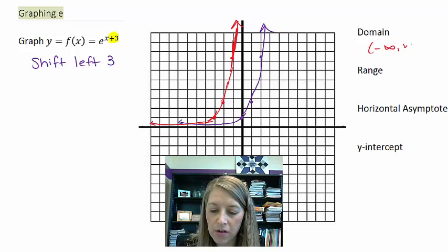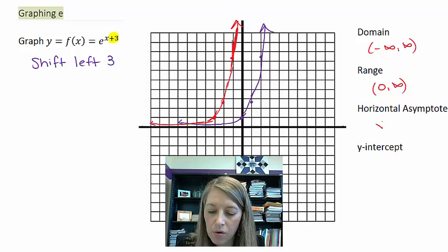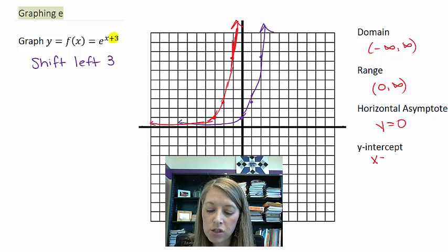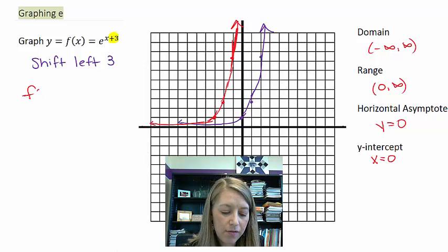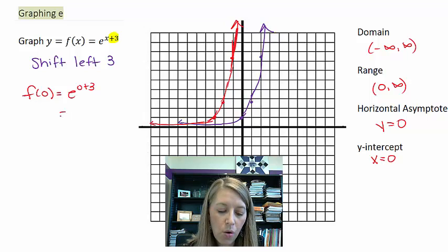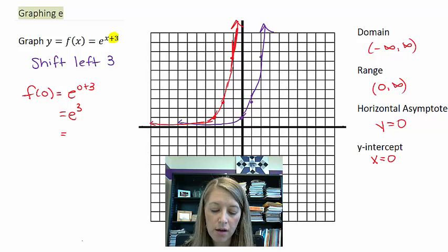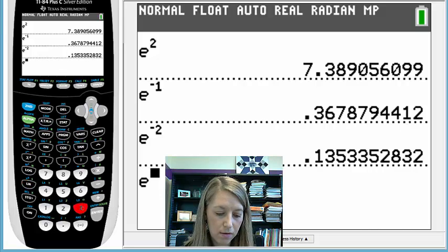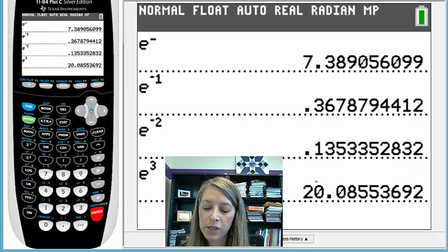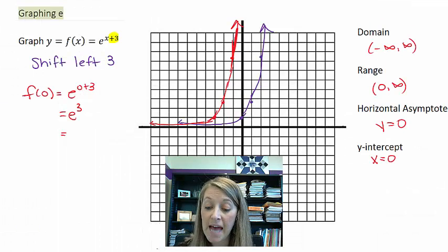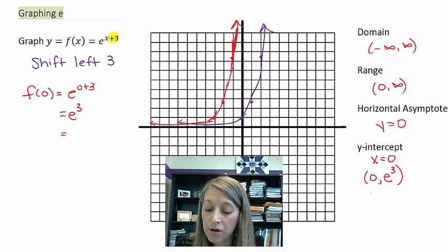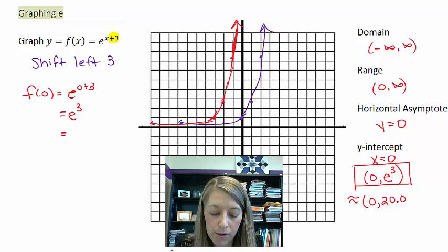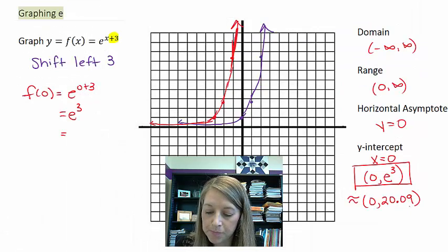My domain stays the same. I can still plug in every x value range. Horizontal asymptote are still the same because all of my values are above 0. My y-intercept might be a little bit more complicated here. I just note that I need to plug in my 0 for x. So f of 0 gives me e to the 0 plus 3 or e to the 3. So I can type in e to the 3rd on my calculator. And so my y-intercept is going to be approximately here, 20.05. If I wanted the exact value, I would actually have to keep it as e to the 3rd. So this is the exact y-intercept. If I wanted the approximate, we just said it would be 20.085, so 0.09.